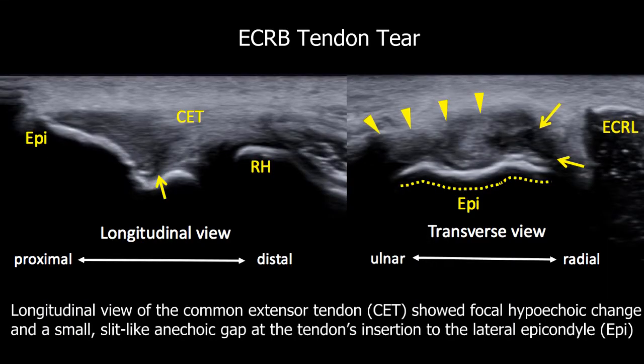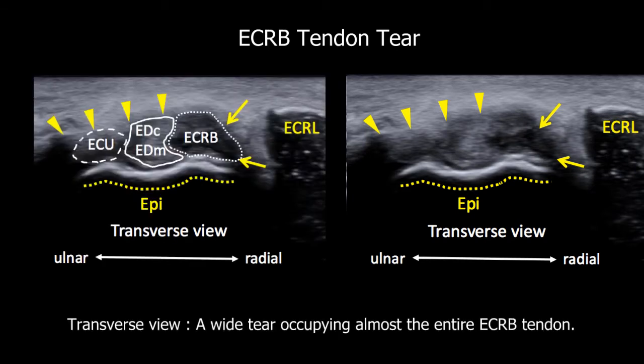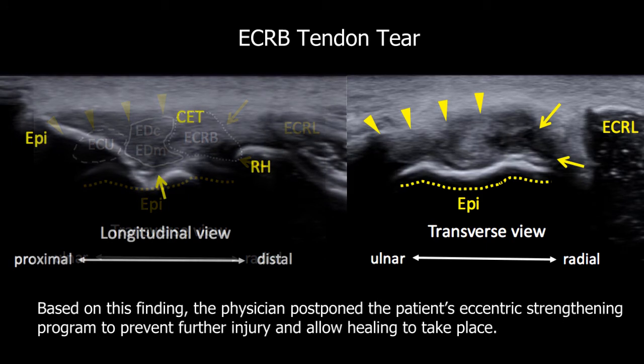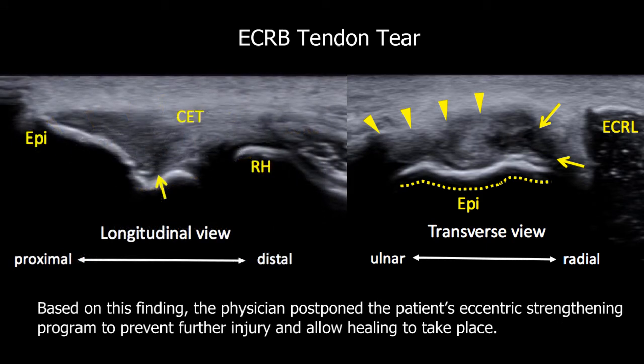In the first case, the longitudinal view of the common extensor tendon showed focal hypoechoic change and a small, slit-like, anechoic gap at the tendon's insertion to the lateral epicondyle. However, the transverse view clearly demonstrated a wide tear occupying almost the entire ECRB tendon. Based on this finding, the physician postponed the patient's eccentric strengthening program to prevent further injury and allow healing to take place.